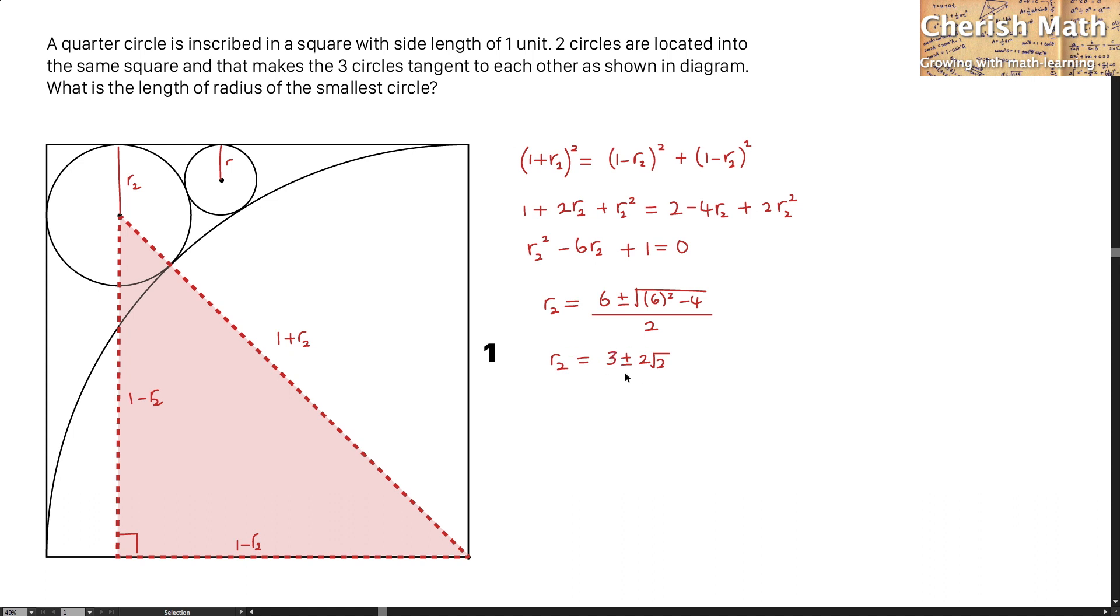So, according to this value, the two possibilities are 3 plus 2 square root of 2, which is more than 3, and 3 minus 2 square root of 2, which is less than 1. So, the value that I'm going to get here is 3 minus 2 times square root of 2.